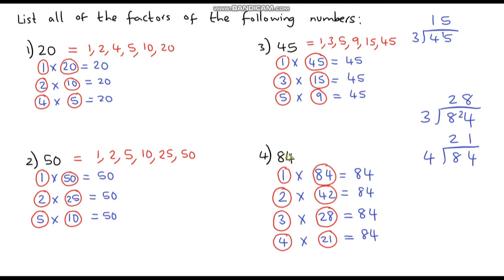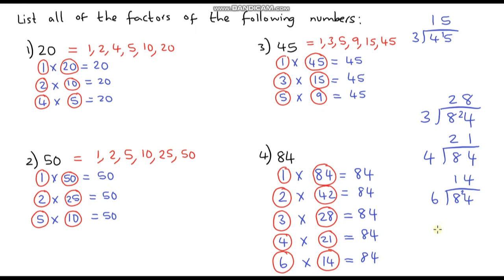5 does not go into 84. 6 does — using the bus stop: 6 goes into 8 once with 2 remainder, and 6 into 24 goes exactly 4 times. So 6 times 14 is 84. Now 7 is also a factor — if you know your 7 times tables you'll know that 7 times 12 is 84. Let's verify using the bus stop: 7 goes into 8 once with 1 remainder, and 7 goes into 14 exactly 2 times. So 7 times 12 is 84.